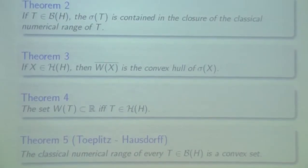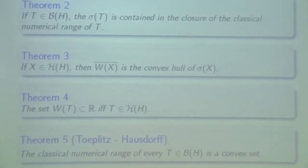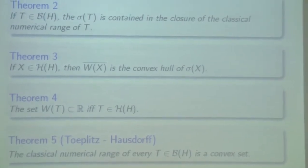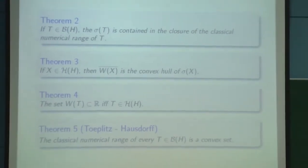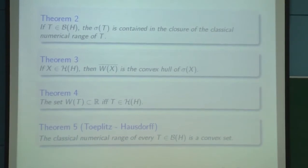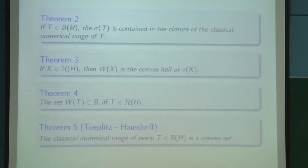Next, for important theorems: the first states that the spectrum of operator T is contained in the closure of the classical numerical range. And theorem number 3, which requires a more general assumption — if H is a separable general operator, then the closure of the classical numerical range is the convex hull of the spectrum.